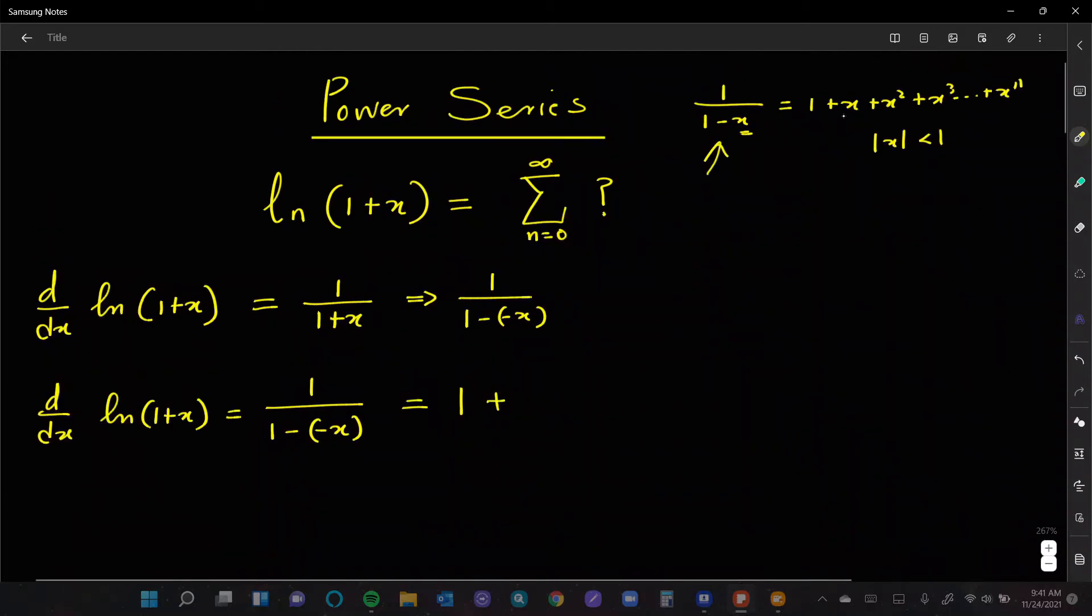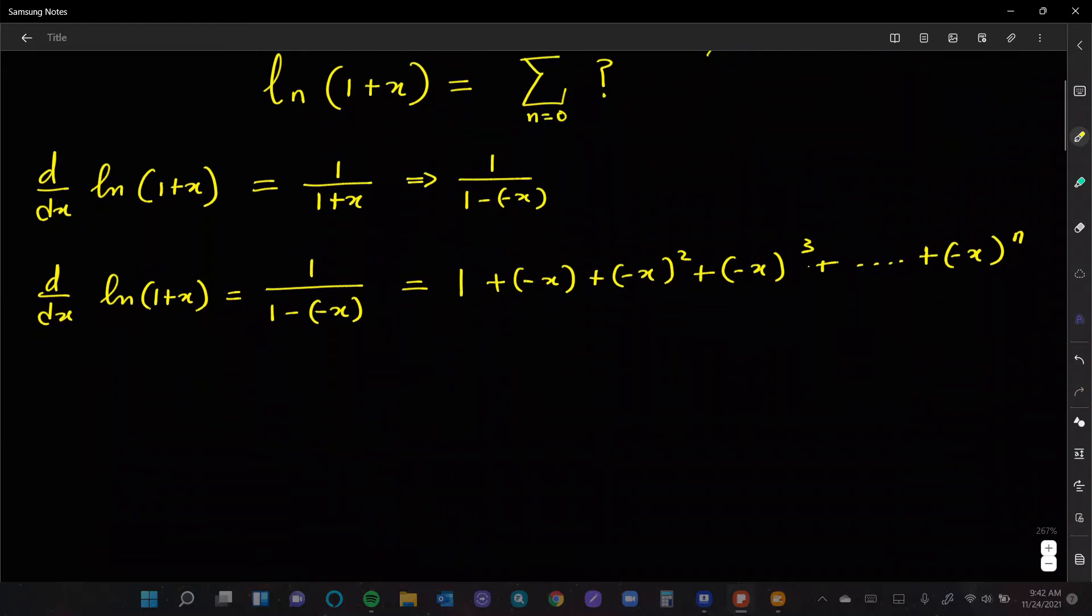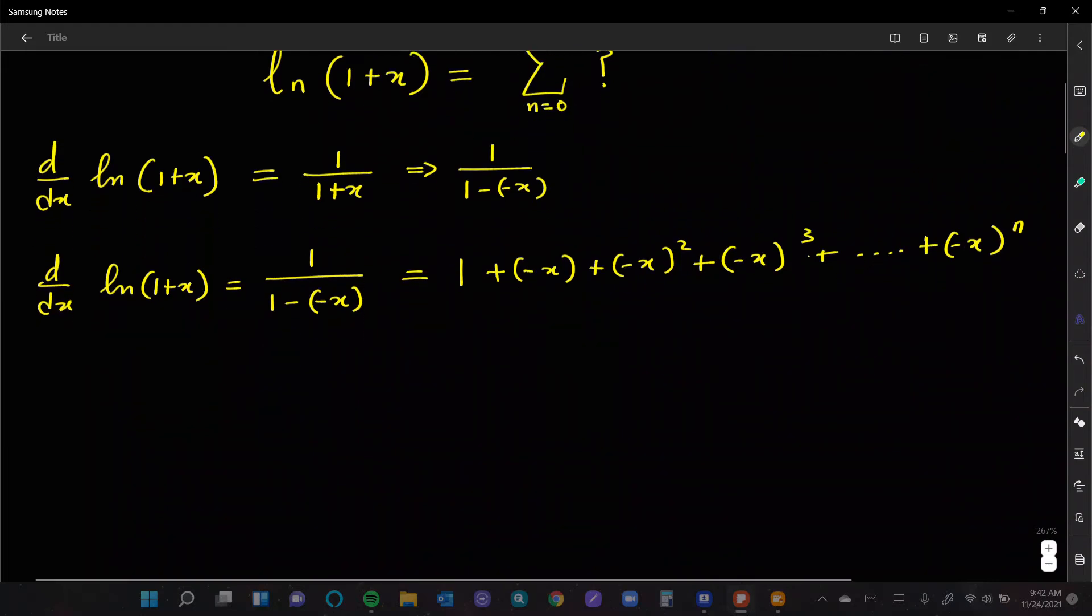So it's going to give us 1 plus, instead of writing x this time, we're going to write negative x, plus another negative x but this time it's squared, plus another negative x this time it's cubed. We just keep going like that until we get to negative x to the n.